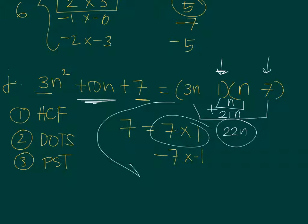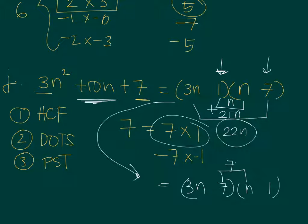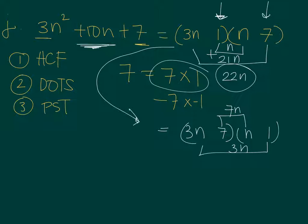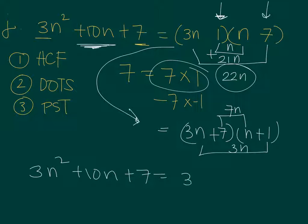Before saying that 1 and 7 is not the correct combination, try interchanging the numbers — maybe 7 must go here and 1 must go there. So the inner product gives 7n, and the outer product gives 3n times 1 which is 3n. And 7n plus 3n is 10n. So the right factored form is 3n plus 7 times n plus 1, meaning 3n squared plus 10n plus 7 equals 3n plus 7 times n plus 1.